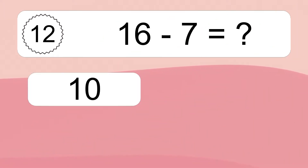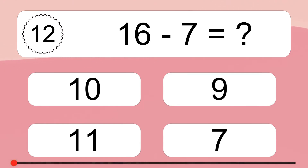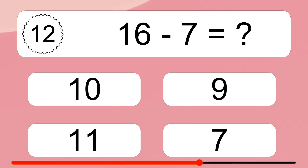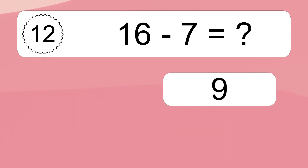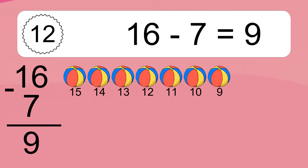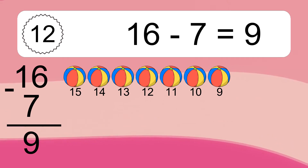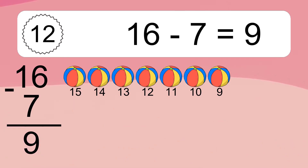16 minus 7 equals what? 16 minus 7 equals 9. Let's count it. 15, 14, 13, 12, 11, 10, 9.